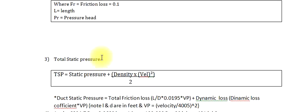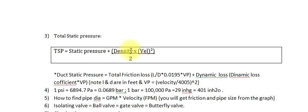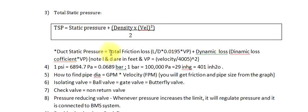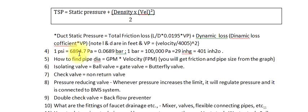Question 3: Total Static Pressure. TSP equals static pressure plus density × V² / 2. Duct static pressure equals total friction loss: (L/D) × 0.0195 × Vp, plus dynamic loss: dynamic loss coefficient × Vp. Note: L and D are in feet, and Vp equals (velocity / 4005)². 1 pound per square inch equals 6894.7 pascals equals 0.0689 bar; 1 bar equals 100,000 pascals.